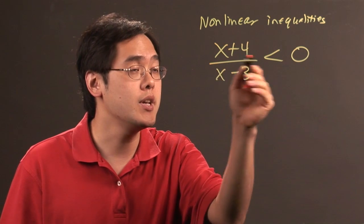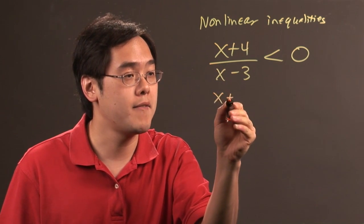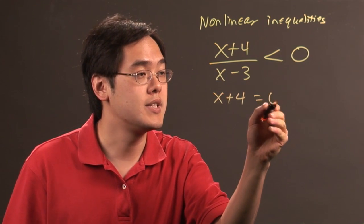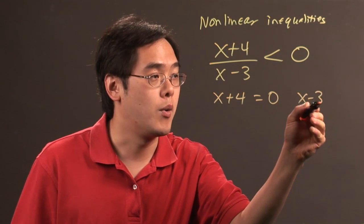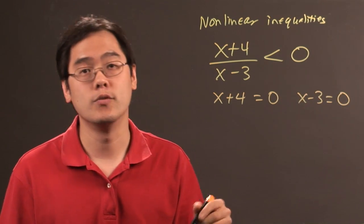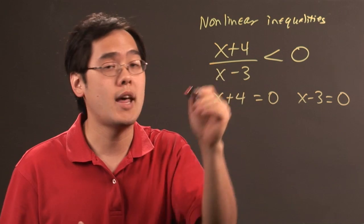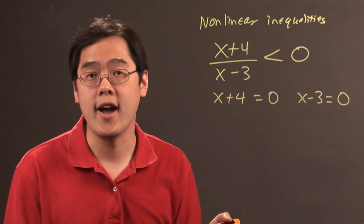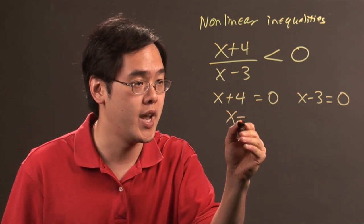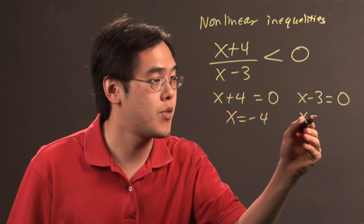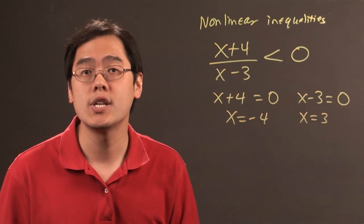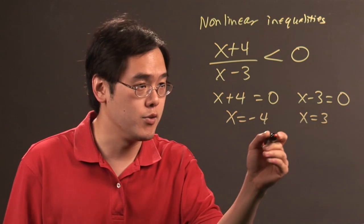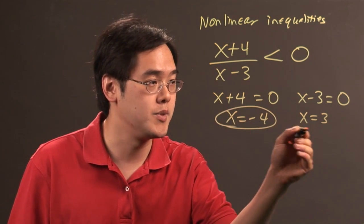Since 0 is on the other side, take every piece and set it equal to 0. We're not saying these are the solutions; these are going to be the critical values once we solve for them. If you solve for x, you have x = -4 and x = 3. Again, these are not solutions, these are the critical values. This is where the critical value method comes in.